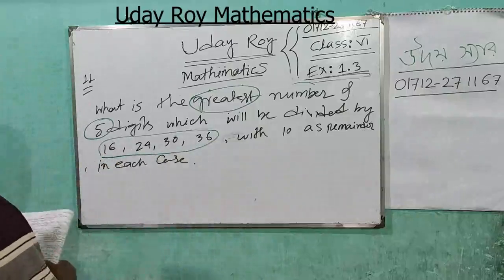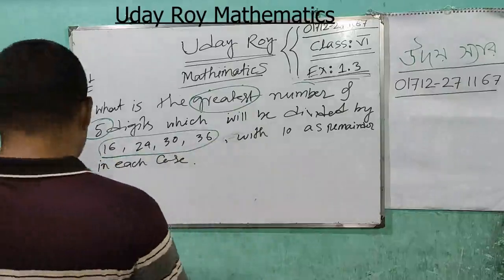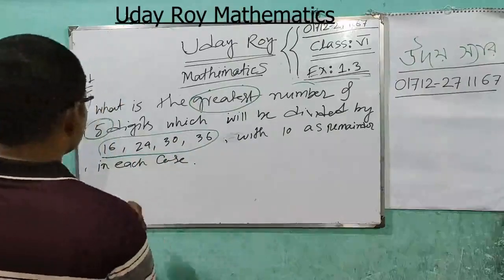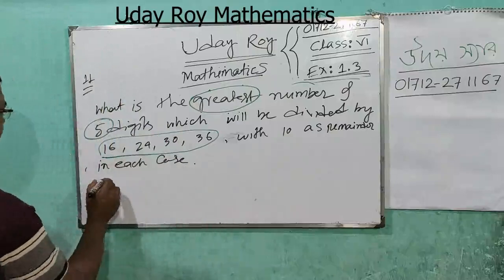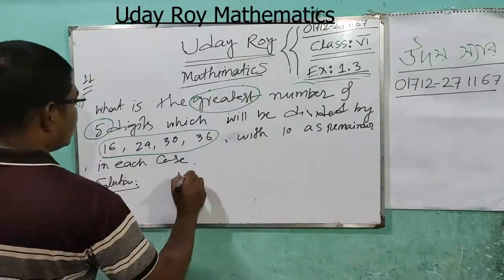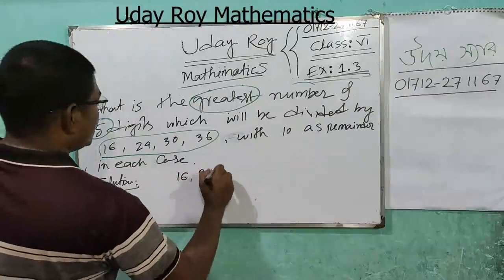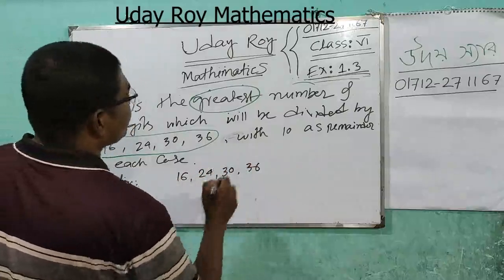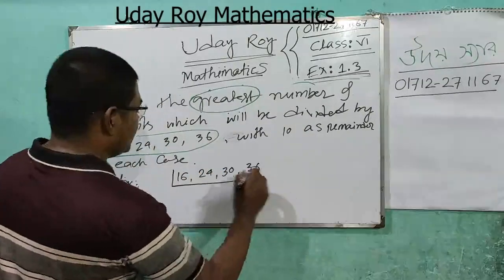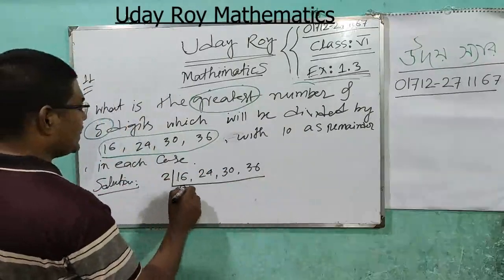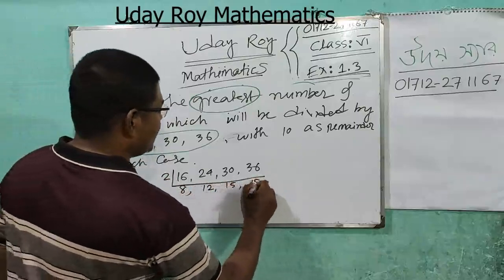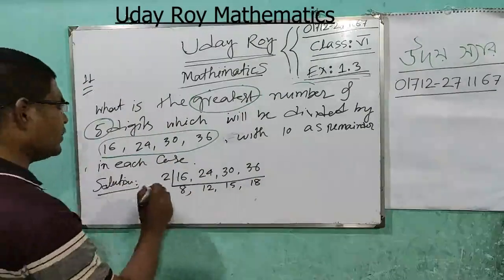LCM of 16, 24, 30, 36. Dividing by 2: we get 8, 12, 15, 18. Again divide by 2: we get 4, 6, 15, 9.